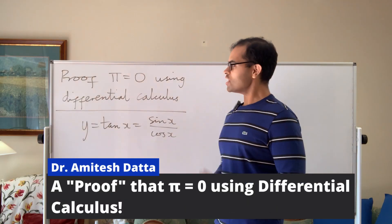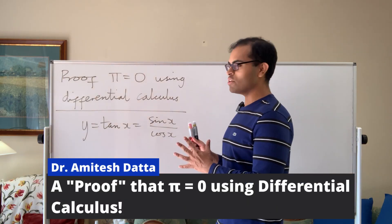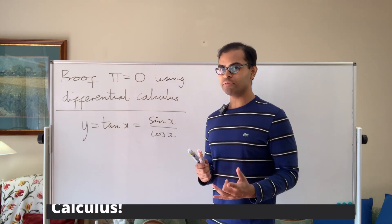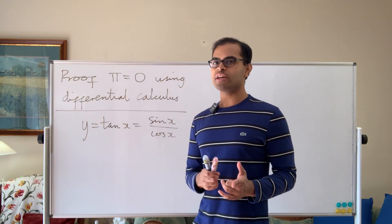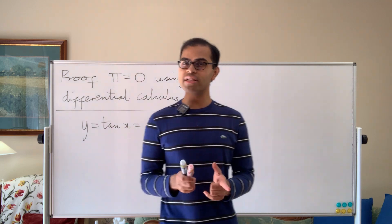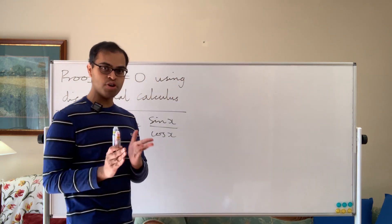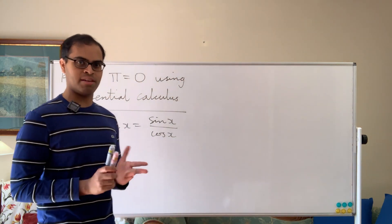I have a challenge for you. A false proof that pi equals zero using differential calculus — it's pretty simple. Why doesn't it break math? Drop a comment down below and share your thoughts without checking the existing comments.